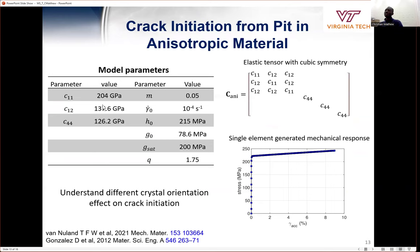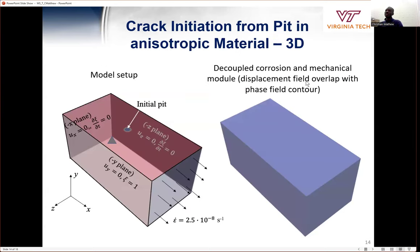Then for the anisotropic material, this is the material parameter that we use for cubic symmetry. And we defined our domain in the 3D domain as shown. This is the initial pit with phase field variable of zero, and for the solid domain, it is one, and also a constant strain rate is introduced here.